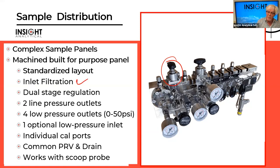In these blocks, we have inlet filtration, dual stage regulator, two line pressure outputs, two low pressure outputs to the analyzer, another optional low pressure inlet. Individual calibration ports for each of the pieces of analytical equipment, common pressure relief valve and drain. If we have options to take the flow restrictor out of the bypass, it allows you to run a high pressure fast loop and mitigates methane emissions. So you don't have to have a low pressure vent of the methane to atmosphere.